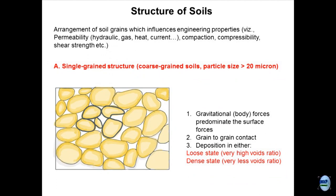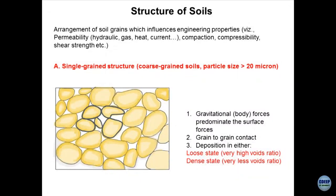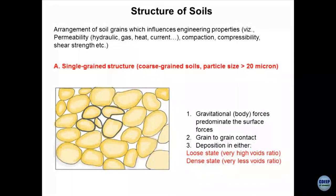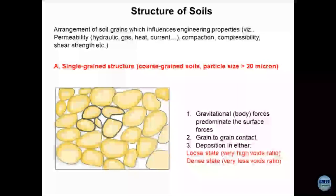Take a few grains of sand and just rub them — a sound comes and you feel a lot of friction being mobilized. This is the mobilization of frictional strength. When you take a clay and do the same thing, it might stick in your hands — that is cohesive strength. These types of depositions are either in a very loose state or in a very dense state. Today we are going to discuss how to quantify the dense state and the loose state of the material.